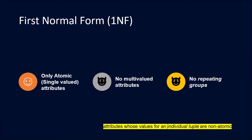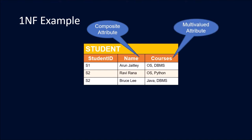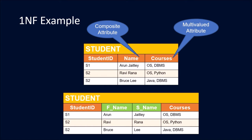First Normal Form allows only atomic or single-valued attributes. It does not allow any multi-valued attributes or repeating groups. In this example, the student table has student ID, name, and courses. The name attribute is composite here because it has two parts: first name and second name. The courses attribute also allows multiple courses in a single column, making it a multi-valued attribute.